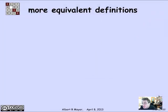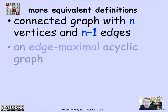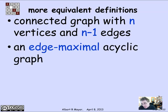So that gives you still another equivalent definition of a tree. A tree is a connected graph that has n vertices and n minus 1 edges. A kind of dual way to think about it is that a tree is an acyclic graph that has as many edges as it possibly could without having any cycles.